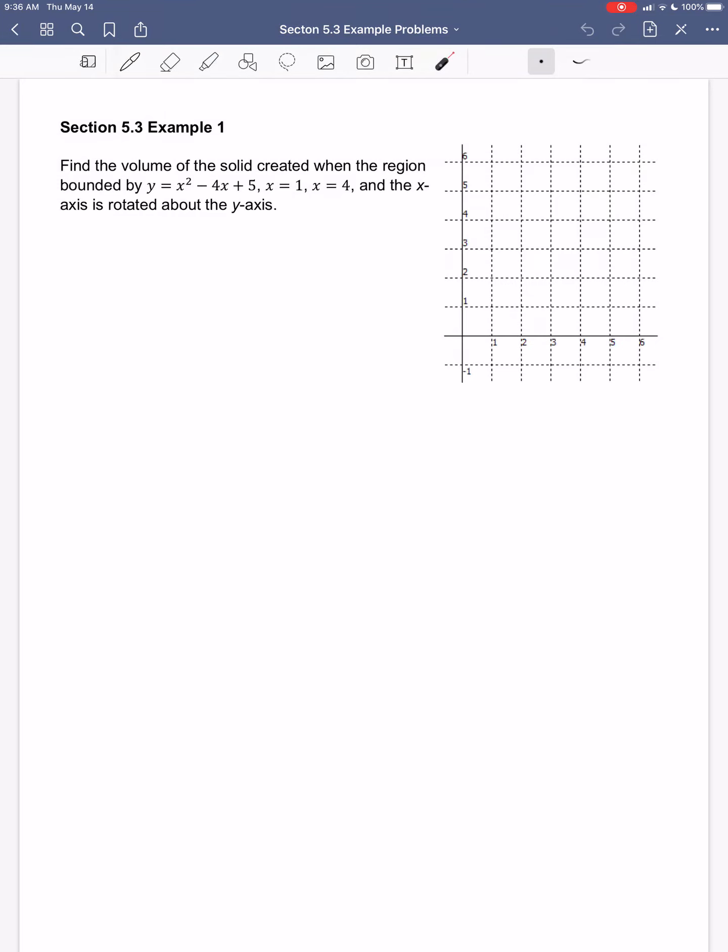In this example problem, we're going to find the volume of the solid created when the region bounded by the equation y equals x squared minus 4x plus 5, and the lines x equals 1, x equals 4, and the x-axis, when that's rotated about the y-axis.